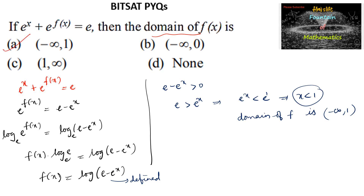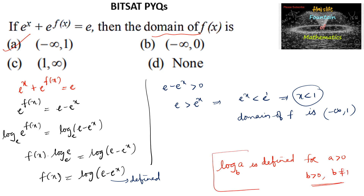We should remember that the logarithm log_b(a) is defined when a > 0, b > 0, and b ≠ 1. Here the base is e, which is always positive, so we only need to check that e - e^x > 0, giving us the domain (-∞, 1).